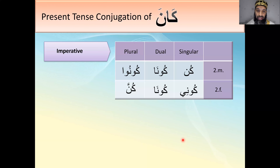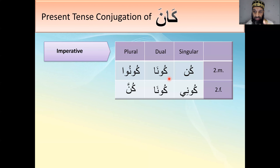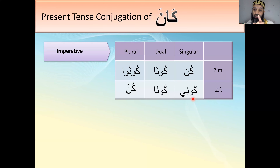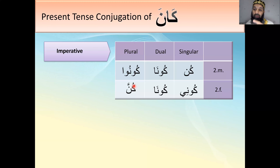The imperative fi'l-amr command form: kun means 'be' to you singular masculine; kun means 'you two be'; kun means 'you all be'; kun means 'you sister be'; kun means 'you two be'; and kun means 'you all women be.'